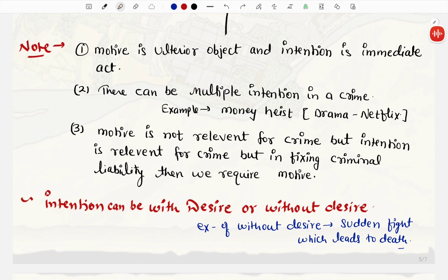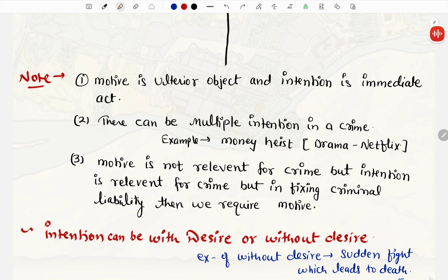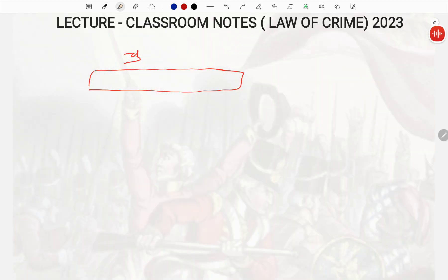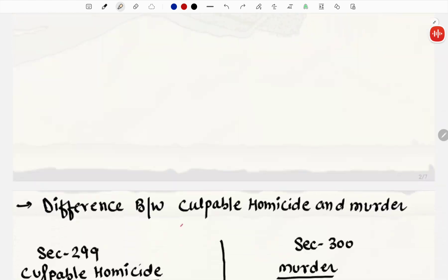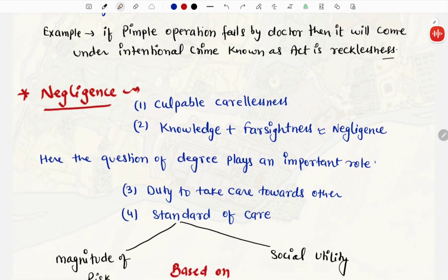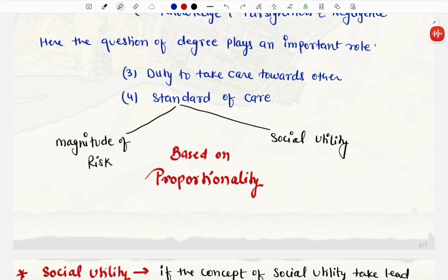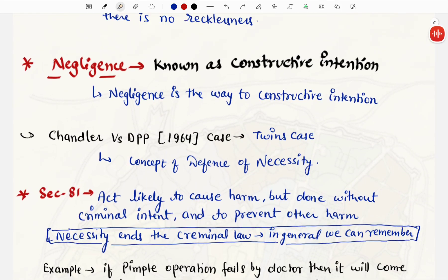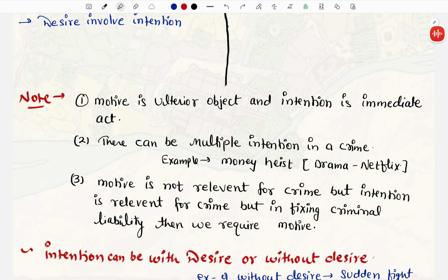Intention ke andar desire bhi involved hoota hai. Without desire, there is no intention. Unintentional act basically, jisko likha sakte hai ki, no purpose design. Jiska koi purpose design nahi hoota, unintentional act ke andar. Iske baad, intention and motive ko understand kerne ke liye, there are some points regarding motive. Motive is ulterior object and intention is immediate act. Ulterior object, andar ka chupa hua object hai. Motive aapka hume shah chupa hua rheta hai. There can be multiple intention in a crime. Just like for example, money heist, jo tha drama Netflix ke andar, woh bank robbery karne ke liye jata hai. There are multiple intention, ki wahan se robbery karke, kisi aur ko distribute karne. There can be a multiple intention in a single crime.